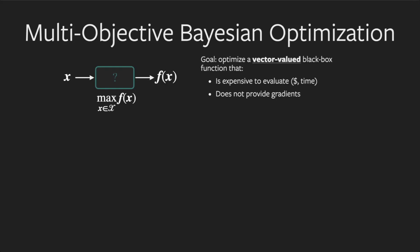The goal in multi-objective Bayesian optimization is to optimize a vector-valued black box function that is expensive to evaluate and does not provide gradient information.